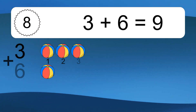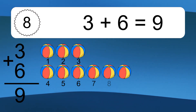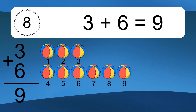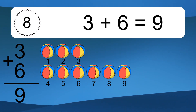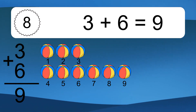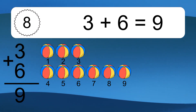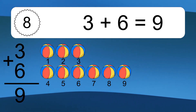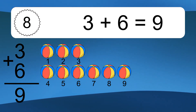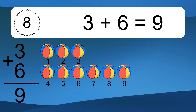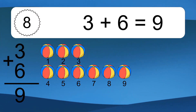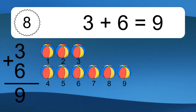3 plus 6 equals 9. Let's count it. 1, 2, 3, 4, 5, 6, 7, 8, 9.